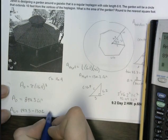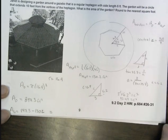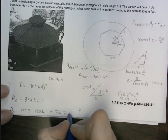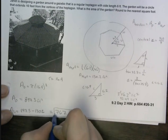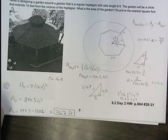So the area of my garden, and they say round to the nearest square foot. So we'll round that to 767. So 767 square feet. Hopefully those extra problems will help you with your homework. Thanks for watchin'.